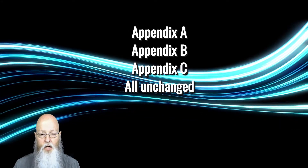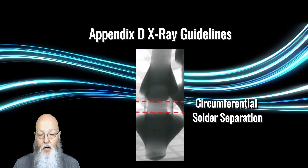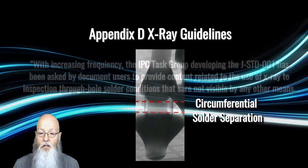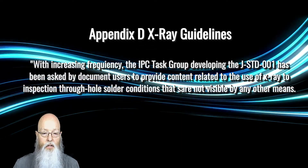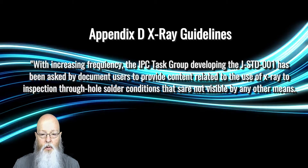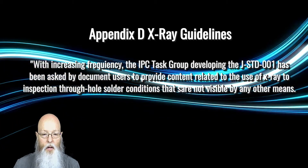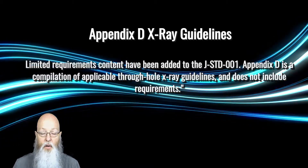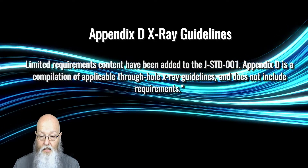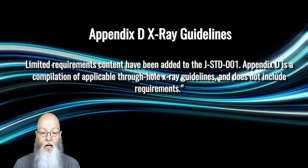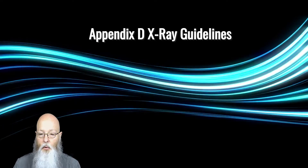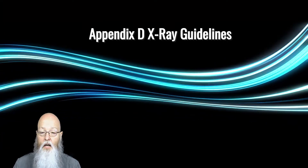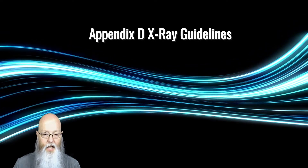Appendices A, B, and C all remain unchanged from Revision G. There is the addition of Appendix D, X-Ray Guidelines. The first paragraph of Appendix D states: 'With increasing frequency, the IPC task group developing the J-STANDARD-001 has been asked by document users to provide content related to the use of x-ray to inspect through-hole solder connections that are not visible by any other means. Limited requirements have been added to the J-STANDARD-001. Appendix D is a compilation of applicable through-hole x-ray guidelines and does not include requirements.' In summary, the industry asked for guidance on x-ray evaluation of through-holes and the committee provided it in Appendix D. If you carry out x-ray of through-hole components, take a look through this content.